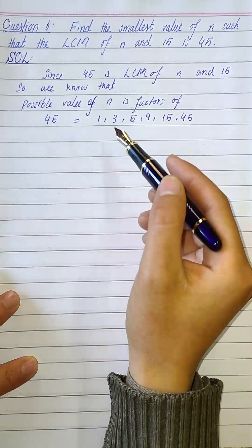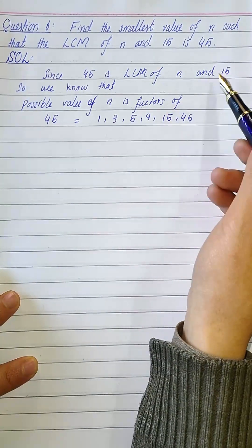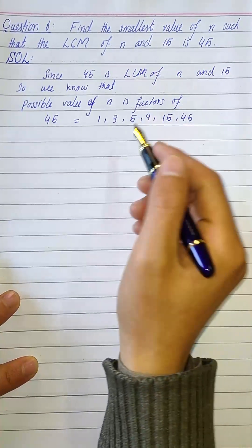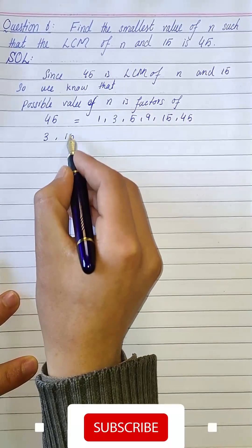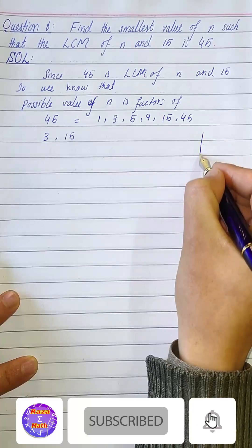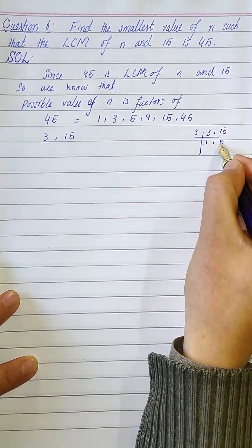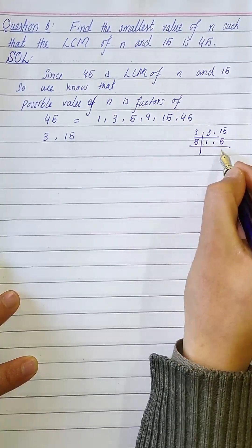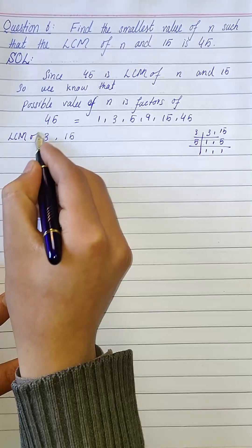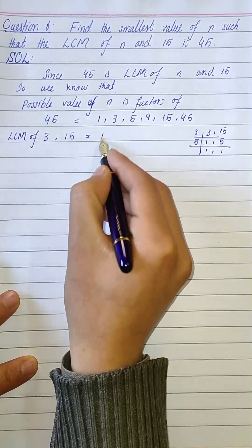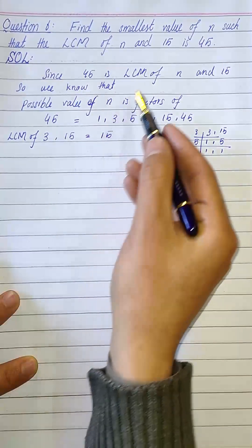Now we have to check whether these values give an LCM of 45 with 15. First, we check LCM(3, 15): since 3 times 5 is 15, the LCM of 3 and 15 equals 15. So 3 cannot be the possible value of n.